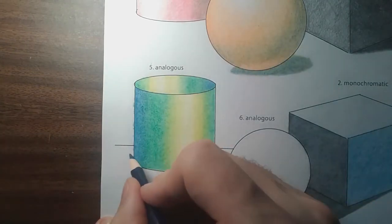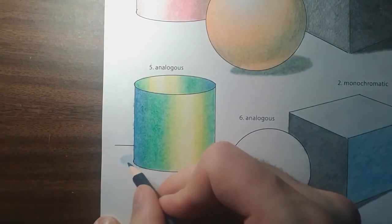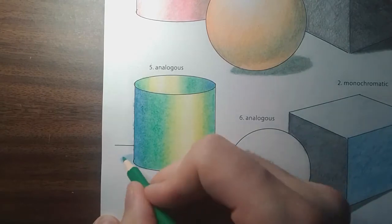And last but not least, the cast shadow on the outside. I'm going to be blending my blue and green together just so I can get that really dark value.